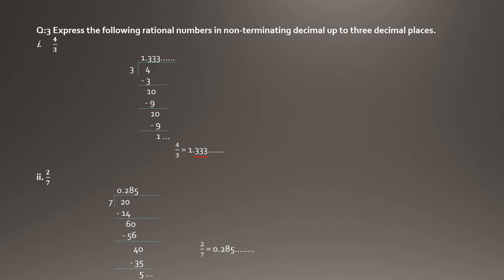Let's solve 4 by 3. Since 4 is larger than 3, 3 goes into 4 once, leaving remainder 1. We take the decimal point and bring down a zero to get 10. 3 goes into 10 three times giving 9, remainder 1. We bring down another zero: 3 goes into 10 again three times. This pattern repeats, so we solve up to three decimal places and the answer is 1.333, which is a recurring decimal.